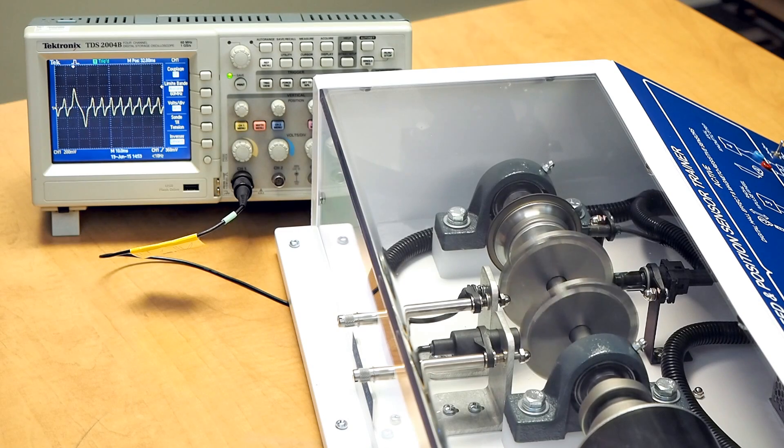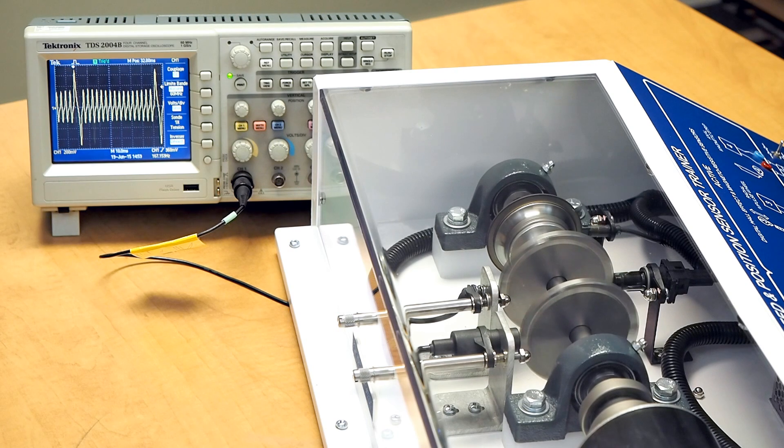Here we can see a textbook pattern for an inductive speed sensor. Now by changing the speed on the shaft, we can see changes in amplitude as well as frequency.